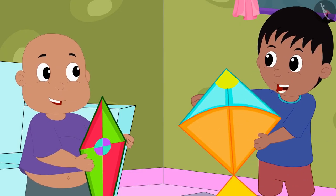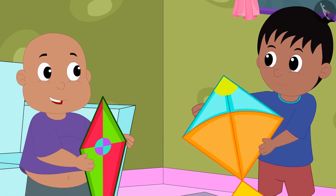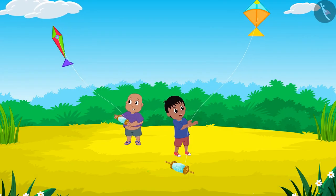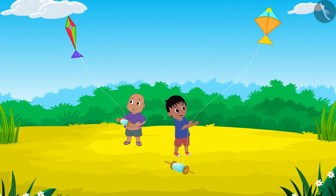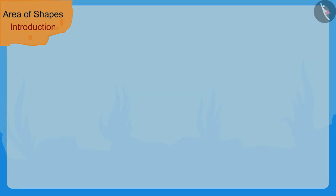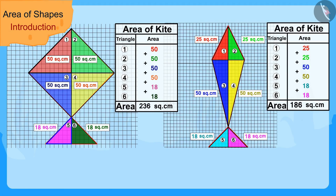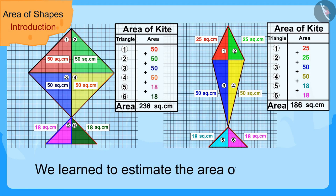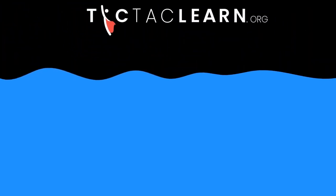Raju said, 'Let us go to the playground and fly our kites.' And the two friends went to the playground to fly their kites. Children, in this video we learned to estimate the area of shapes. In the next video, we will learn more about it through some interesting examples. We'll see you next time. Bye!